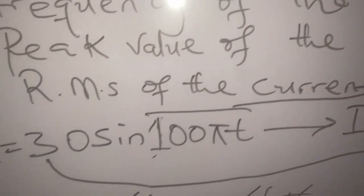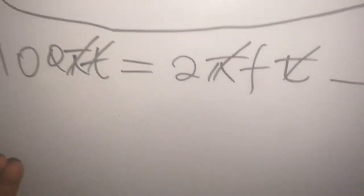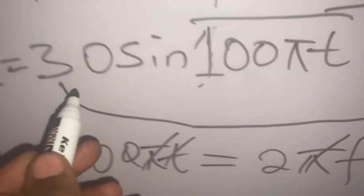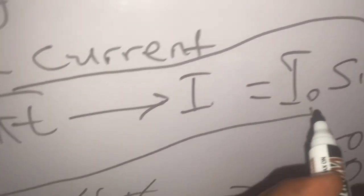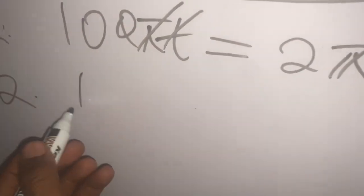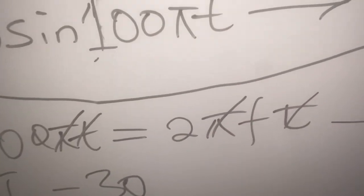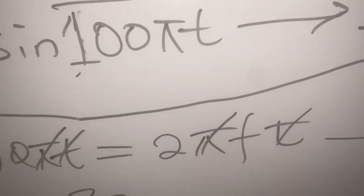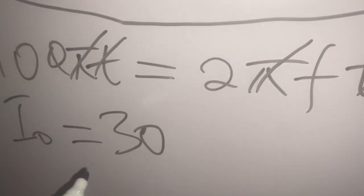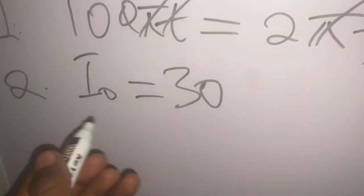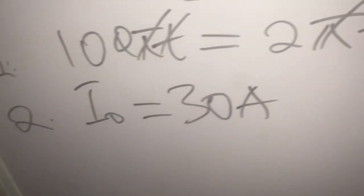To find the peak value of the current: I₀ is the peak value, and it corresponds to 30 from our equation. Therefore, I₀, which is the peak value, is equal to 30 amperes.